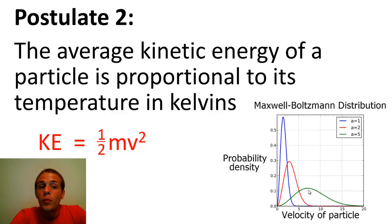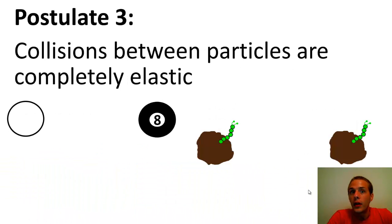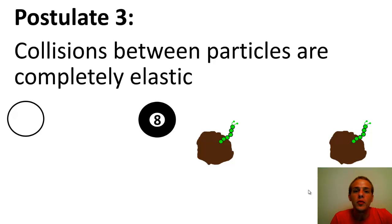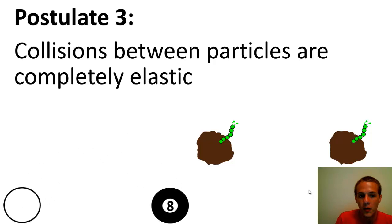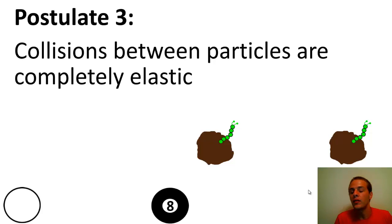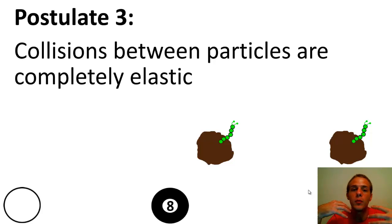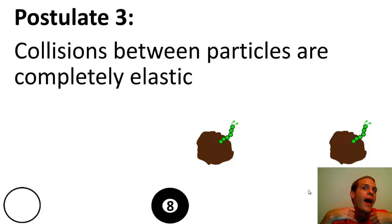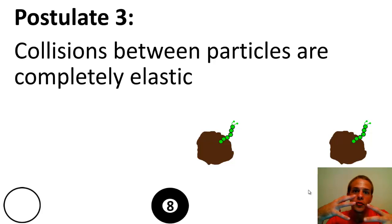The third postulate of the kinetic molecular theory states that collisions between particles are completely elastic. Suppose we have two billiard balls traveling towards one another and they slam into one another — this would be what we call an elastic collision. Basically what it means is that when the two particles collide with one another, no energy is lost in the form of heat. The kinetic energy of both particles is the same before the collision as it is after the collision. None of that energy was lost to the surroundings in the form of heat.